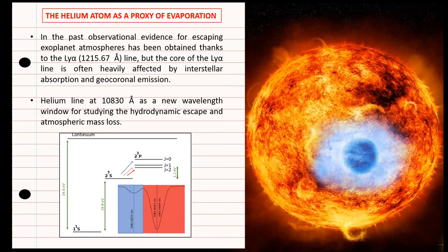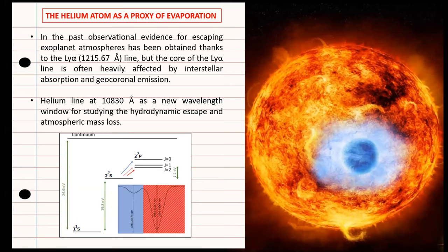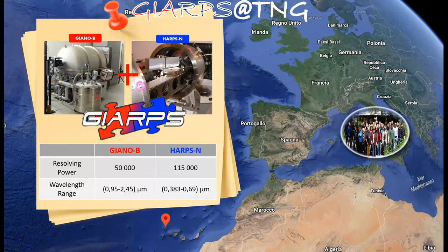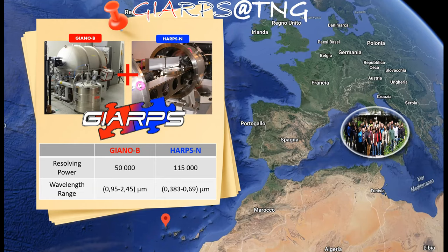We have observed HD 189733b within the large long-term program of the Italian GAPS community at the Telescopio Nazionale Galileo by exploiting the opportunity offered by GIARPS at the Telescopio Nazionale Galileo, which bonds two halves, root spectrograph Giano-B in the near-infrared and HARPS-N in the visible.